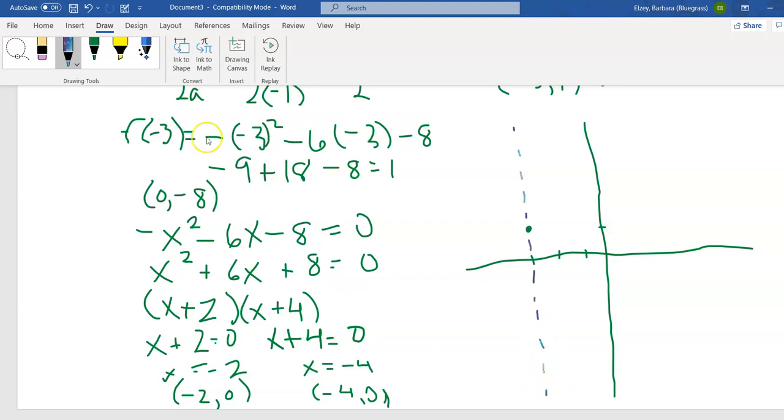Now I'm going to go back and put my y-intercept 0 negative 8, 0 negative 8. 1, 2, 3, 4, 5, 6, 7, 8, right here. Now we'll just sort of estimate how far this is from that dotted line and go to the other side about the same distance away. Maybe right about there is another point. Now lastly, let's plot negative 2, 0, that's right here. And negative 4, 0, I'll just put another tick mark on there, it's going to be right here.